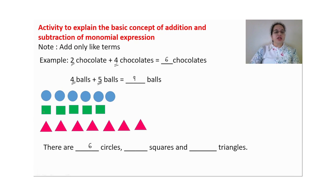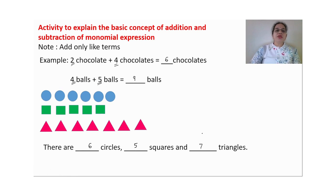How many squares are there? Counting: 1, 2, 3, 4, 5 — there are 5 squares. How many triangles are there? Just count: 1, 2, 3, 4, 5, 6, 7 — there are 7 triangles. So what are we doing here? We are adding only like terms.